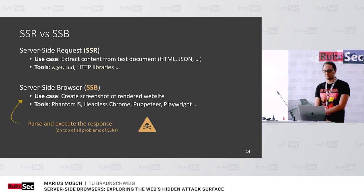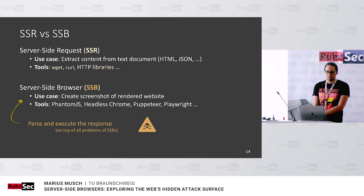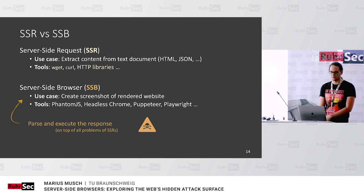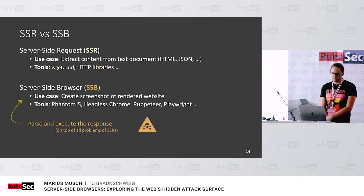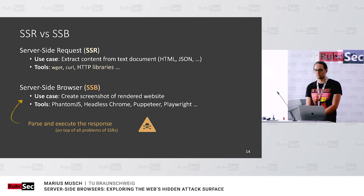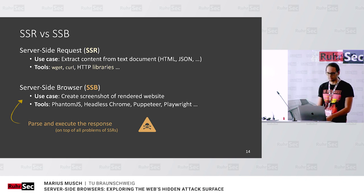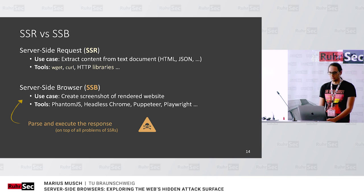So we have server-side requests — SSR — which you get if you use curl, requests in Python, Axios in Node.js, and so on. These are useful if you just want to fetch a JSON file and extract something from it. But in some cases, a real browser has advantages — especially if you want to do a screenshot of a dynamic website that needs JavaScript. You can't do a preview of YouTube without actually executing JavaScript, so a tool like Headless Chrome, Puppeteer, or Playwright is much more useful.